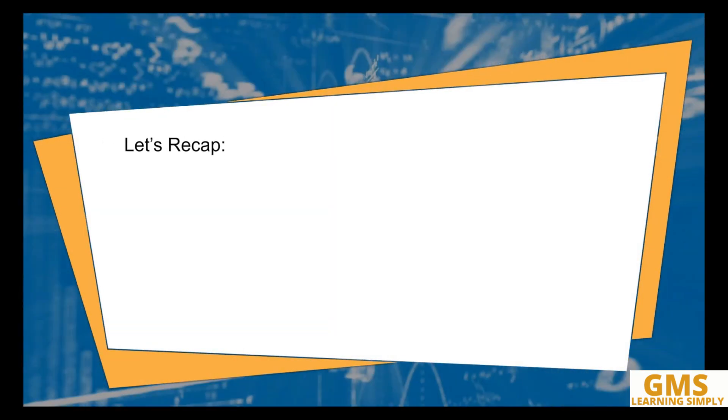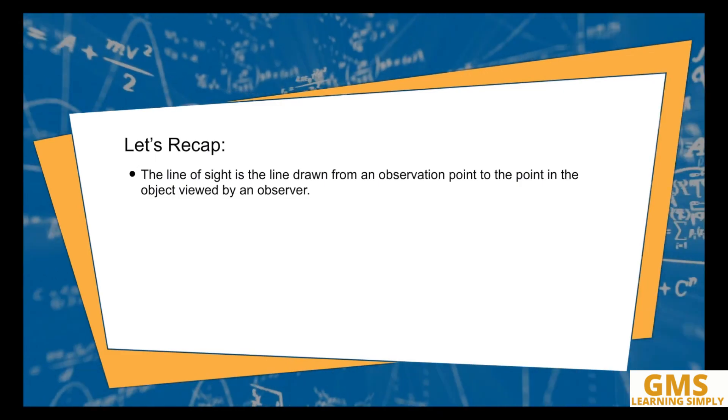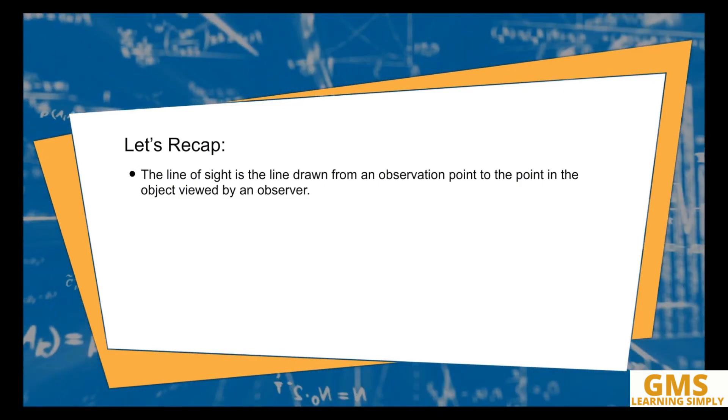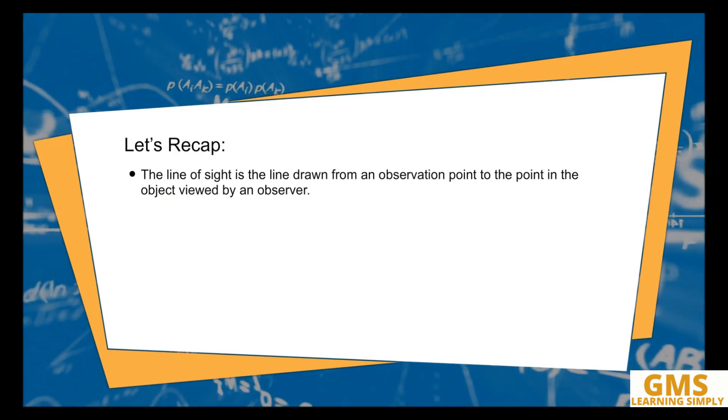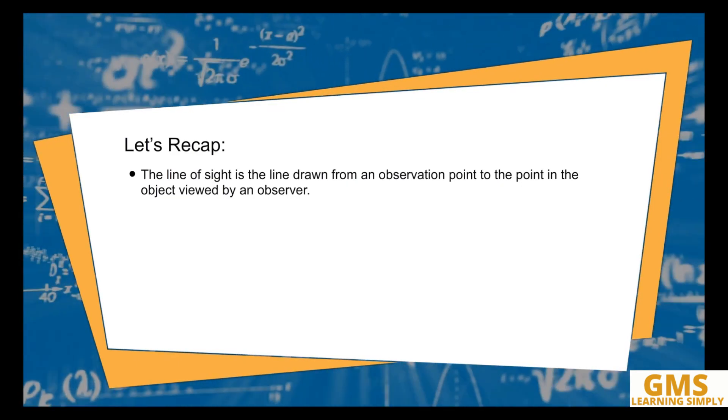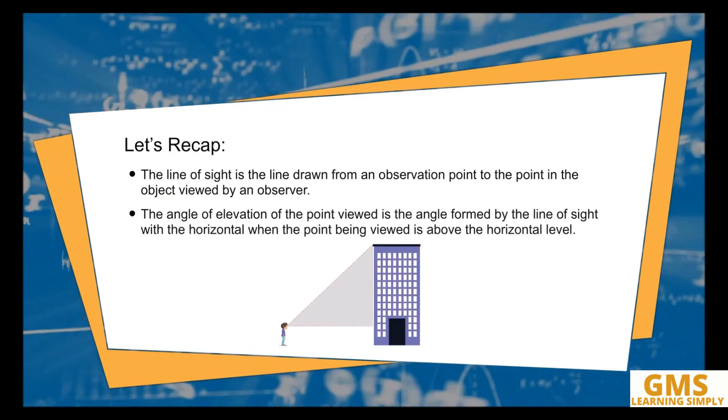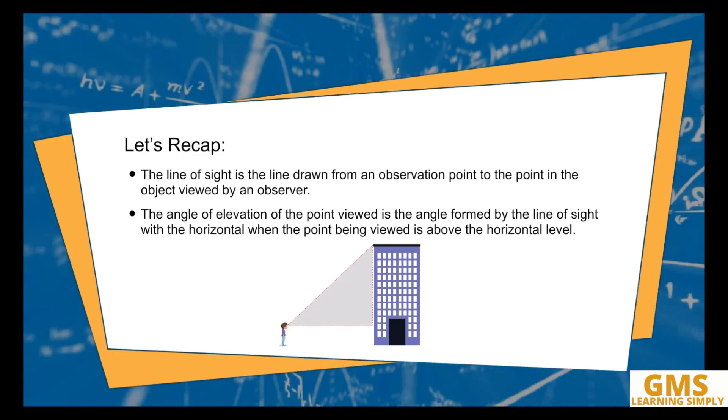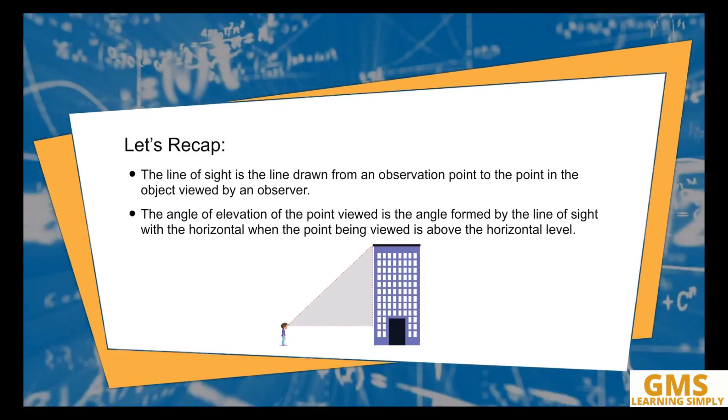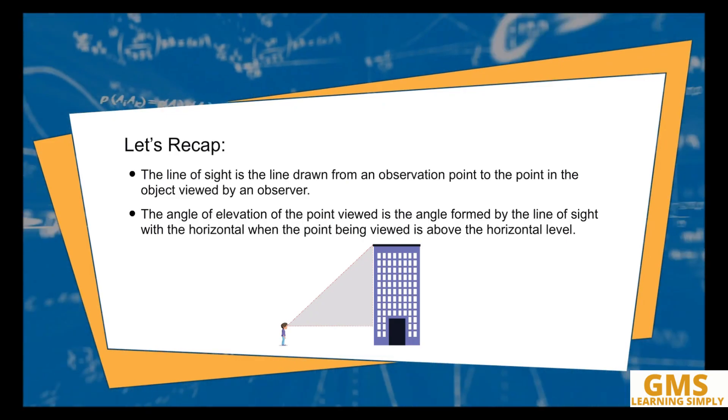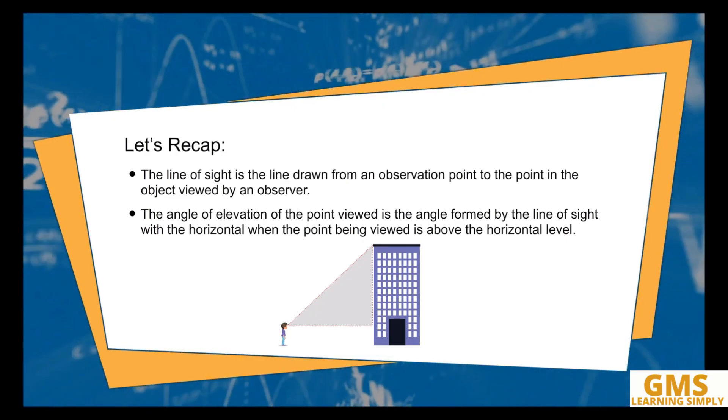Let's recap. The line of sight is the line drawn from an observation point to the point in the object viewed by an observer. The angle of elevation of the point viewed is the angle formed by the line of sight with the horizontal when the point being viewed is above the horizontal level.